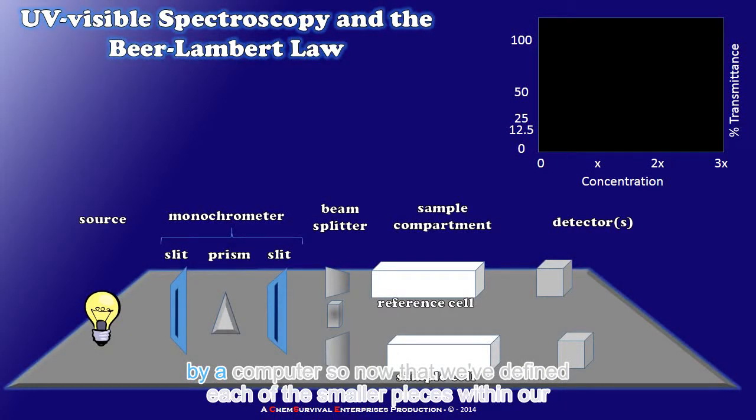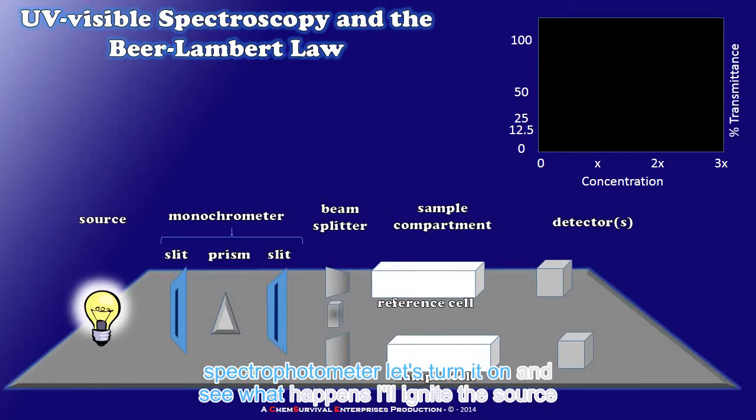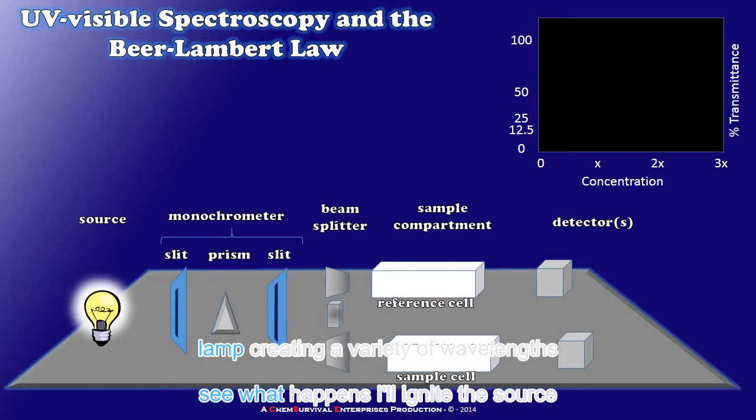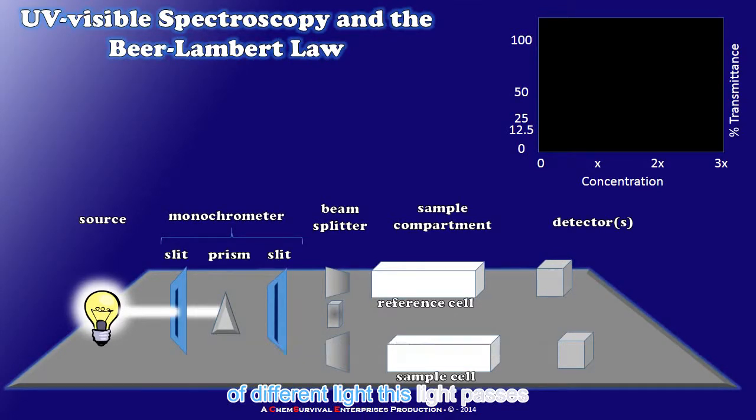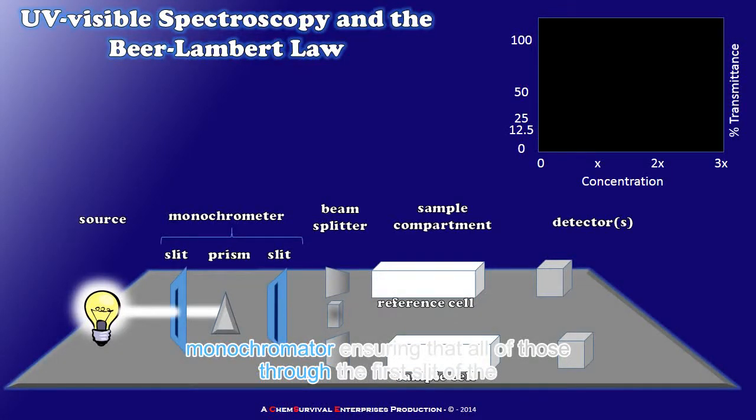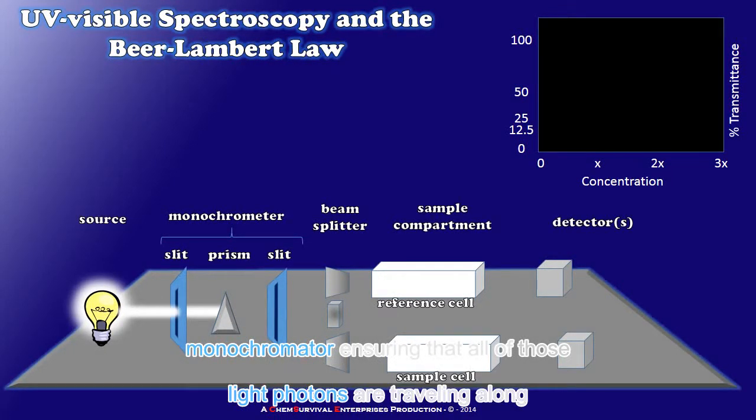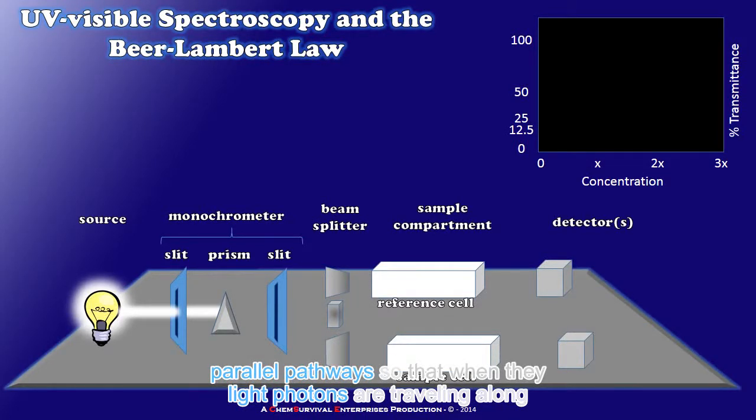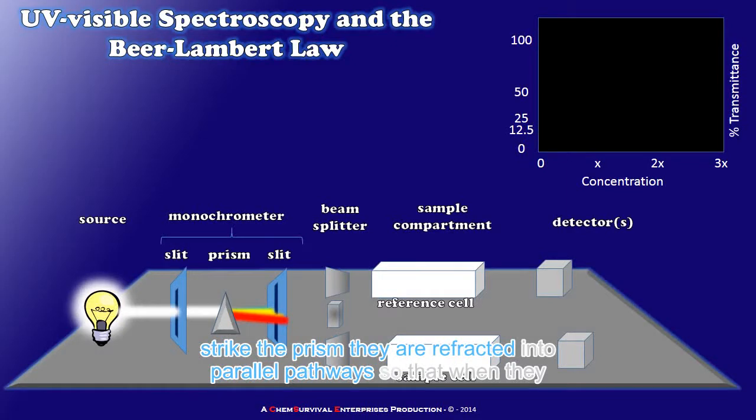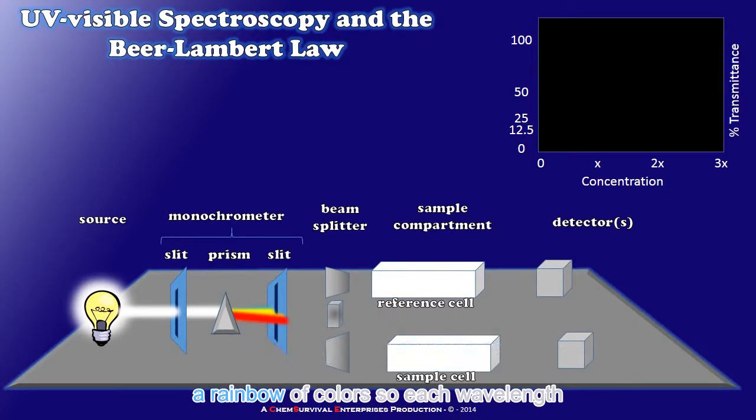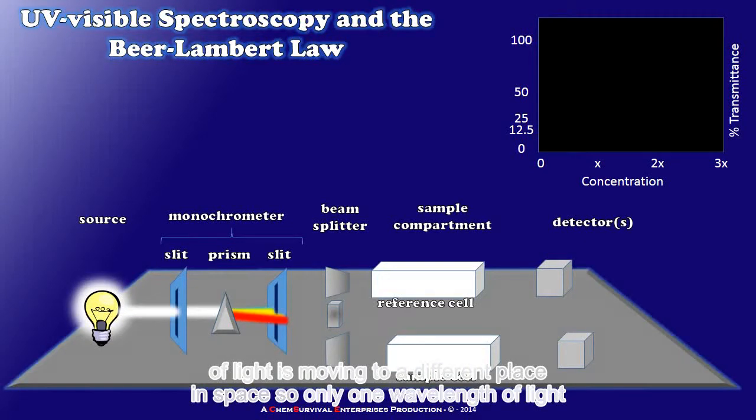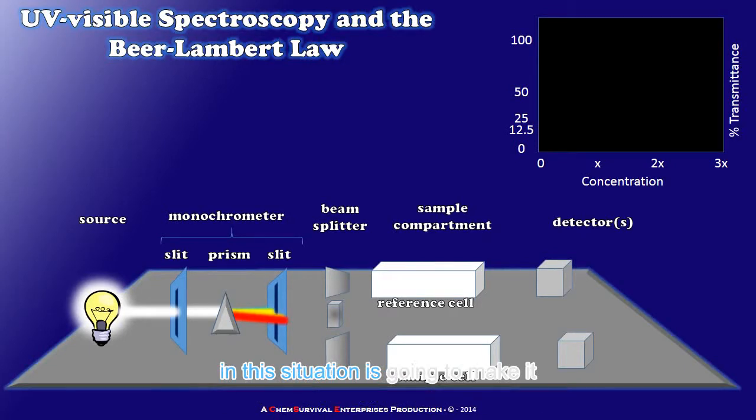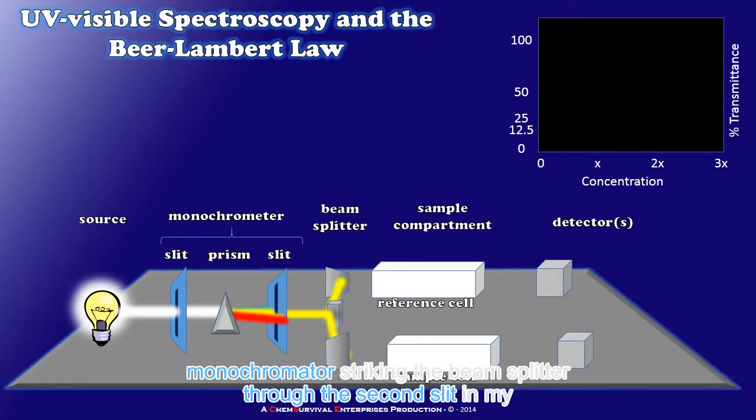So now that we've defined each of the smaller pieces within our spectrophotometer let's turn it on and see what happens. I'll ignite the source lamp creating a variety of wavelengths of different light. This light passes through the first slit of the monochrometer ensuring that all of those light photons are traveling along parallel pathways so that when they strike the prism they are refracted into a rainbow of colors. So each wavelength of light is moving to a different place in space. So only one wavelength of light in this situation is going to make it through the second slit in my monochrometer striking the beam splitter and becoming two beams of equal intensity.